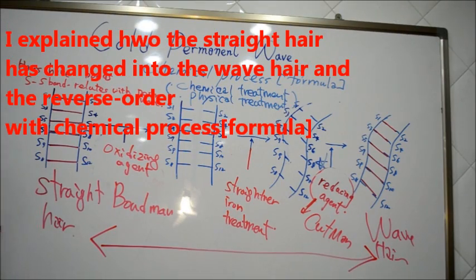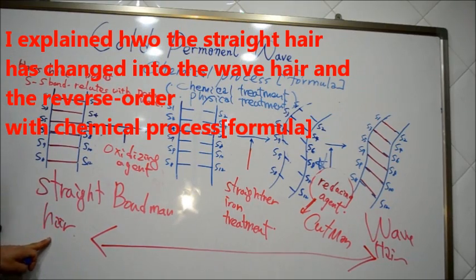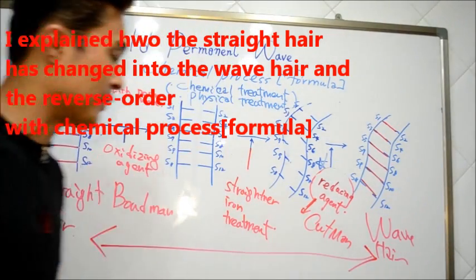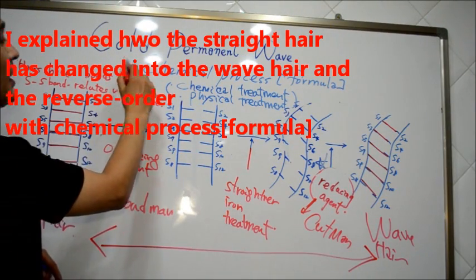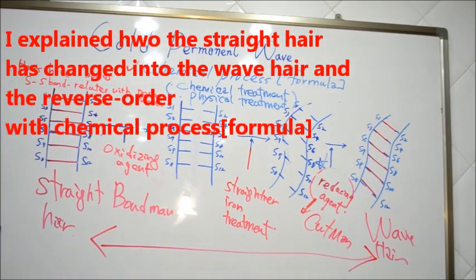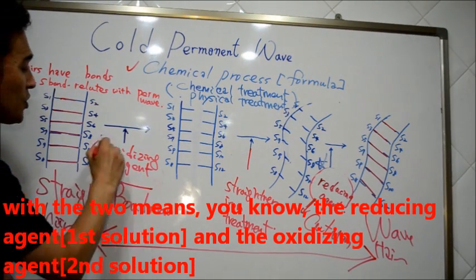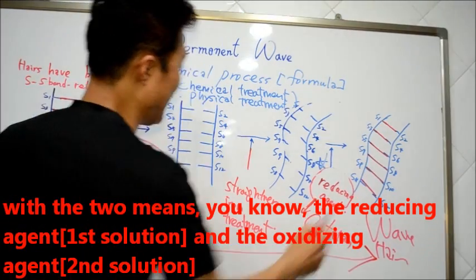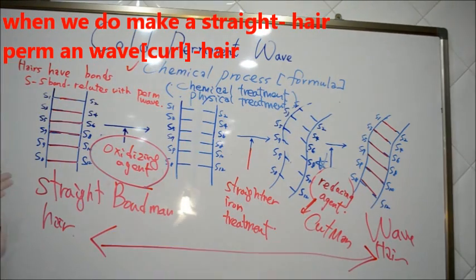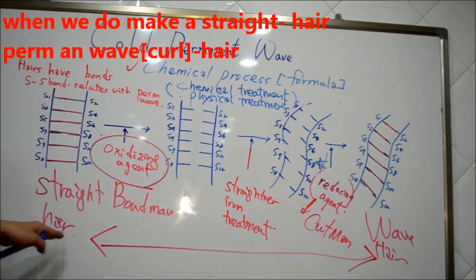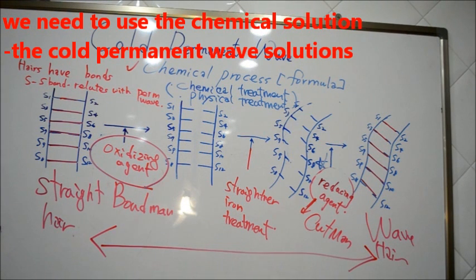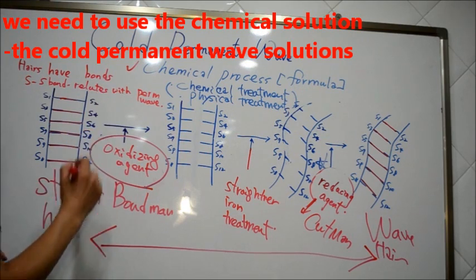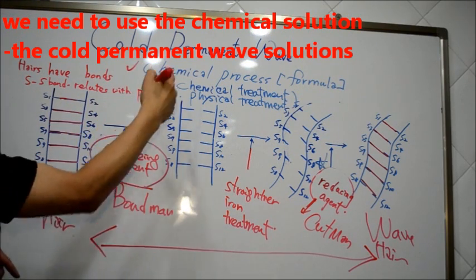I explained how the hair has changed with the chemical process formula, using reducing and oxidizing agents to reform S-S bonds. When we do straight hair into wavy hair, or wavy hair into straight hair, we need chemical solutions.